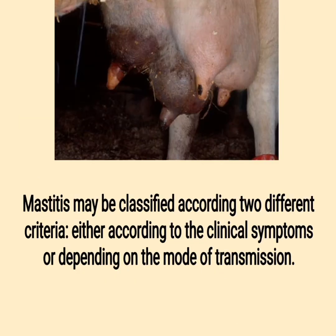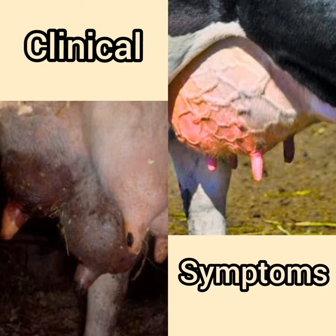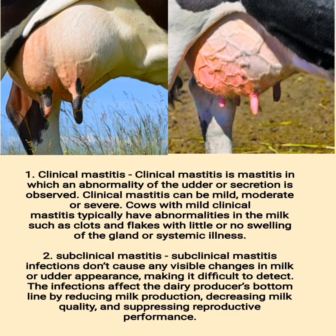Mastitis may be classified according to different criteria: either according to the clinical symptoms or depending on the mode of transmission. (1) Clinical mastitis is mastitis in which an abnormality of the udder or secretion is observed. Clinical mastitis can be mild, moderate, or severe. Cows with mild clinical mastitis typically have abnormalities in the milk such as clots and flakes, with mild or no swelling of the gland or systemic illness.